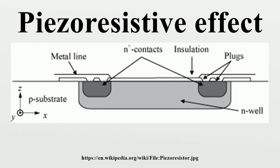Mechanism: In conducting and semi-conducting materials, changes in interatomic spacing resulting from strain affect the band gaps, making it easier for electrons to be raised into the conduction band. This results in a change in resistivity of the material within a certain range of strain. This relationship is linear, so that the piezo-resistive coefficient — where ρ equals change in resistivity, ρ equals original resistivity, and ε equals strain — is constant.